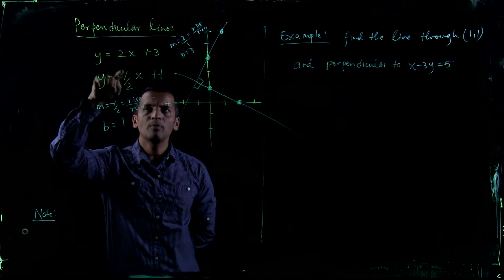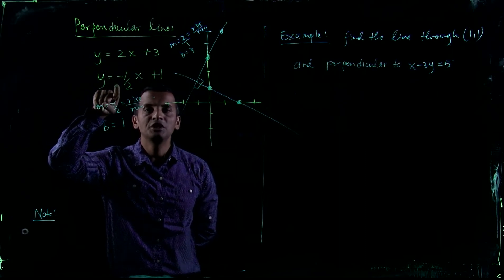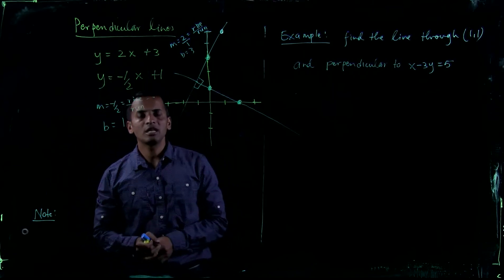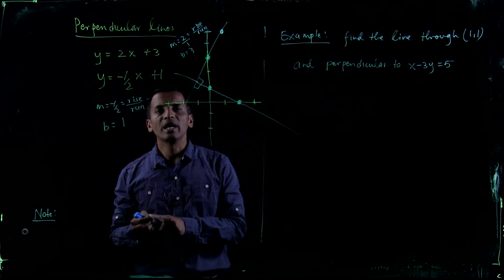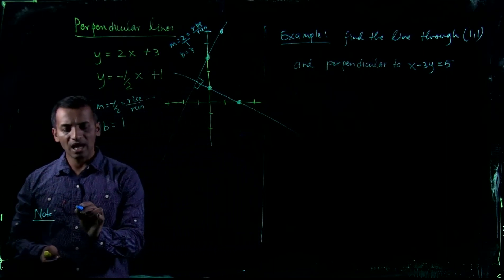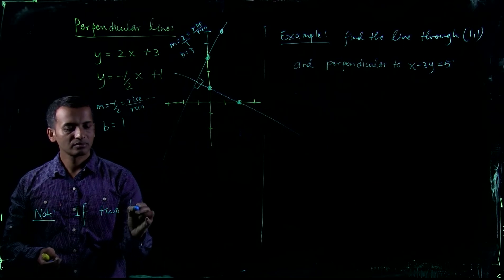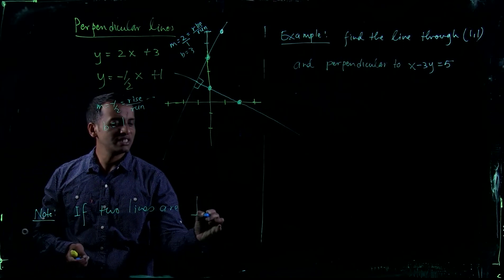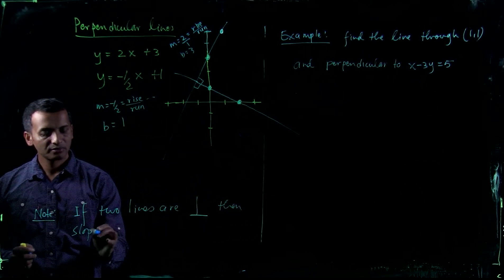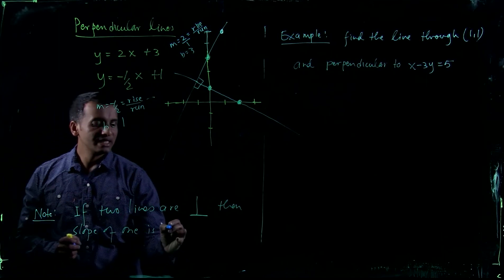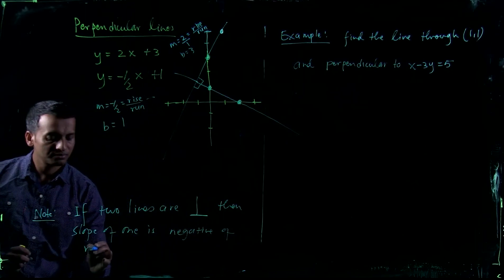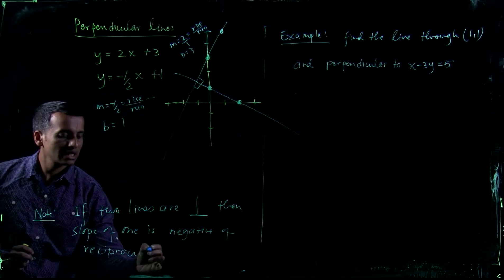The first line has slope 2 and the second has slope negative one-half. The slope of the second line is the negative of the reciprocal of the first. So if two lines are perpendicular, the slope of one is the negative of the reciprocal of the other.